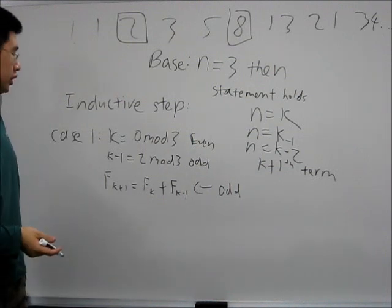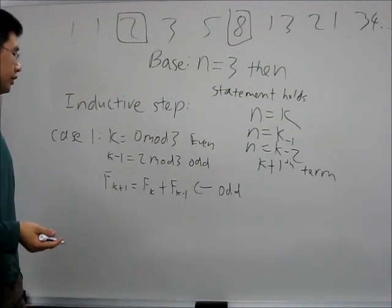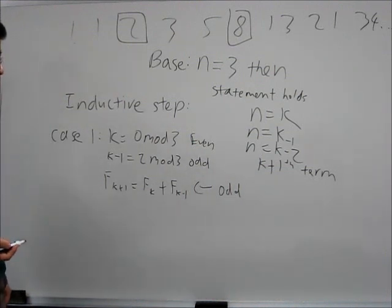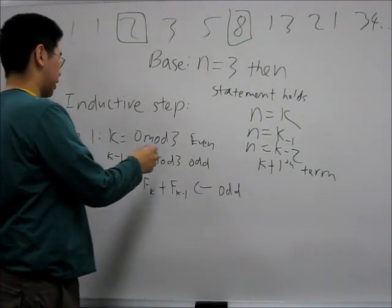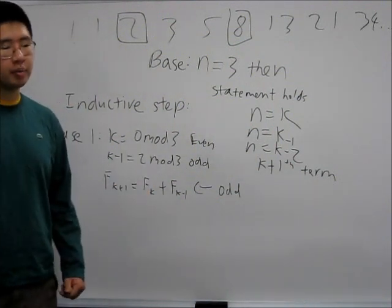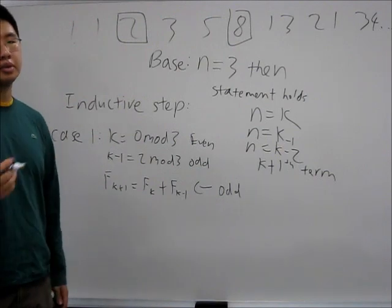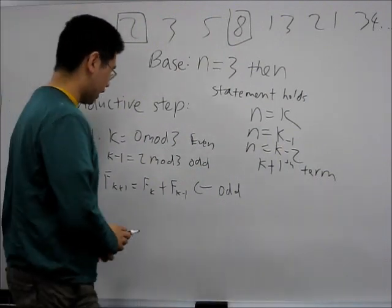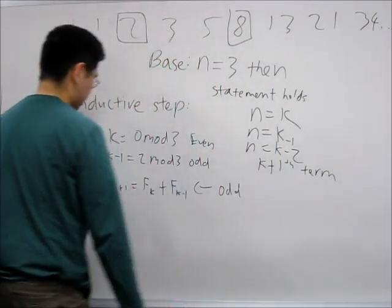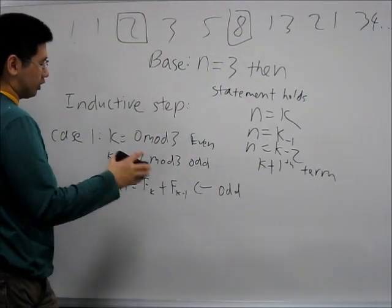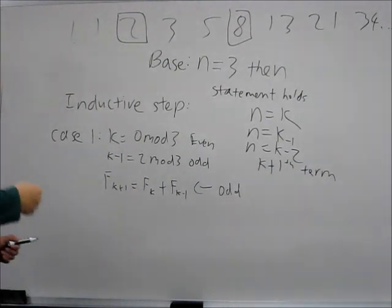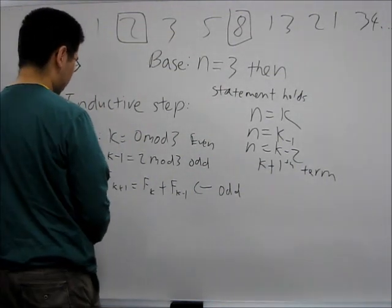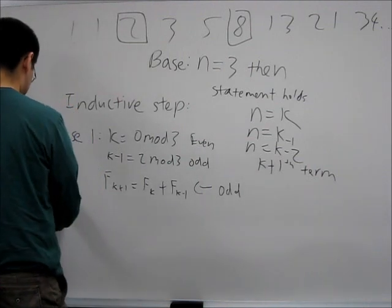So we have proved that if k is divisible by 3, then k plus 1 is not divisible by 3. From this point, we can keep going and create case 2.